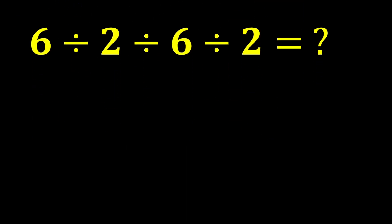In the expression 6 divided by 2 divided by 6 divided by 2, there is more than one division. Since all of these division operations have the same priority, according to PEMDAS, we must move from left to right and perform the divisions in order.